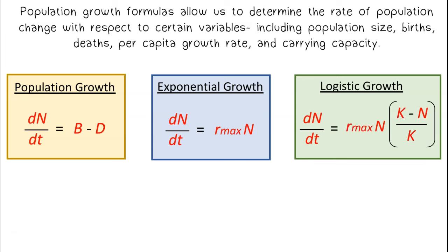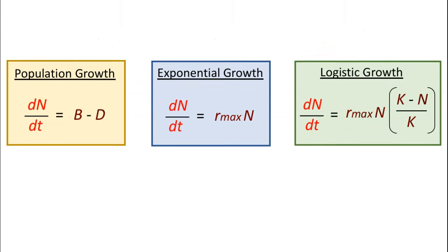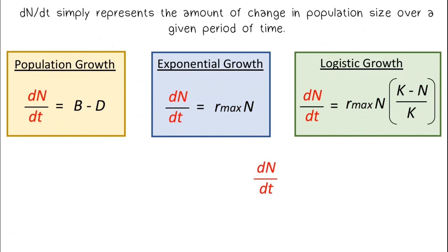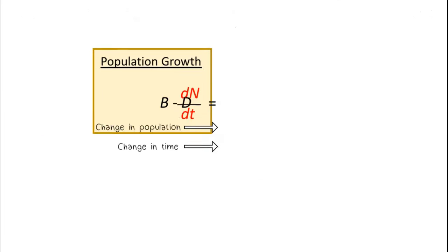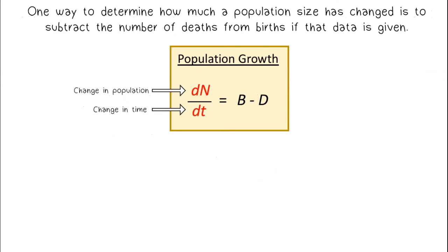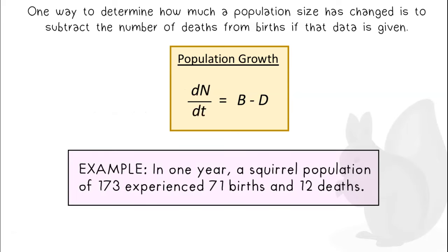Let's take a look at the variables in these three equations. dN over dt simply represents the amount of change in population size over a given period of time. One way to determine how much a population size has changed is to subtract the number of deaths from births if that data is given.